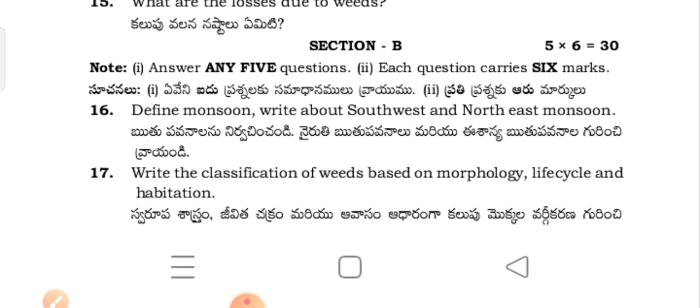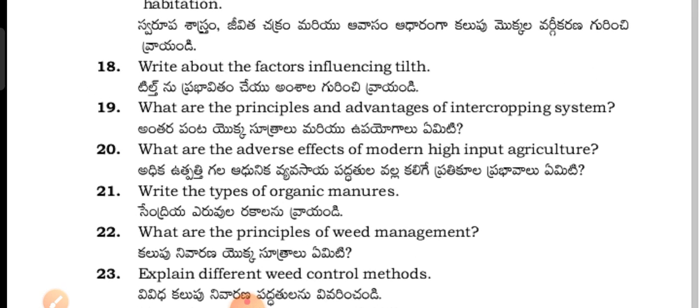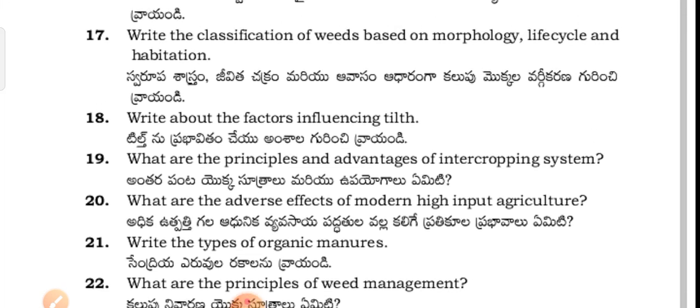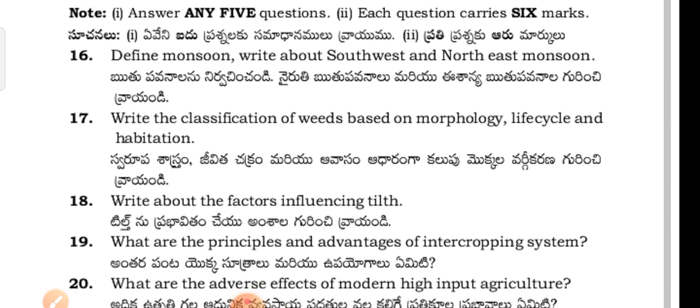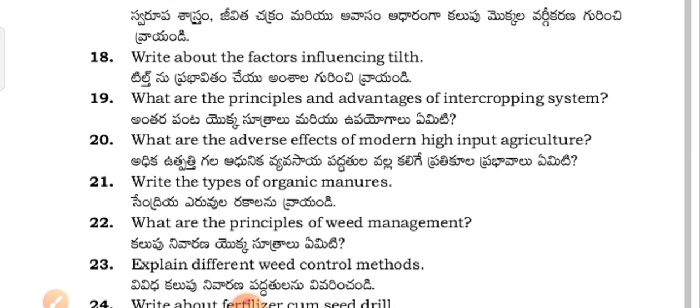Variety classification of weeds based on morphology, life cycle, and habitation — Swarupu shashanam jeevitha chekra marir avasam adhanu kalupu makkula valki kanna guri nirvachin channdi. Tillage nirvachin channdi.